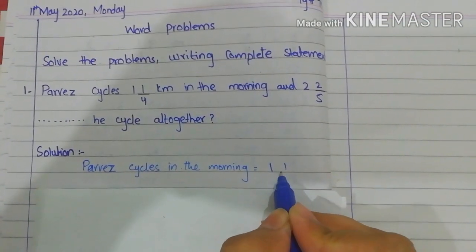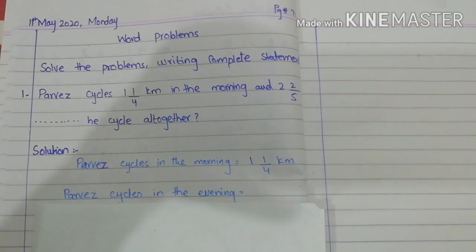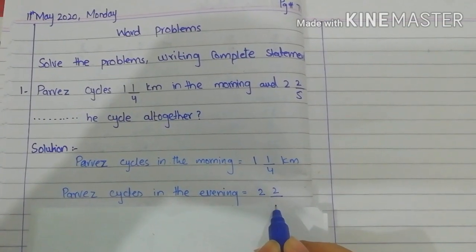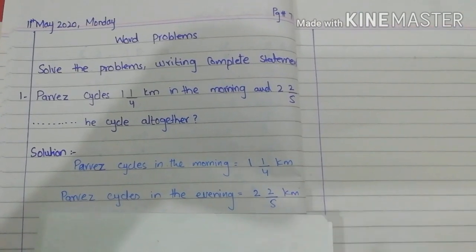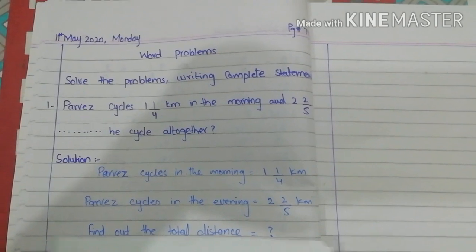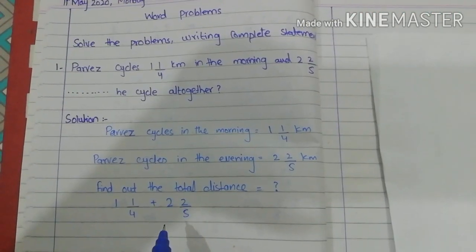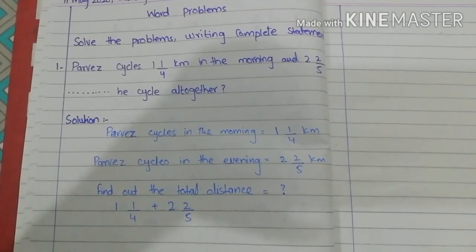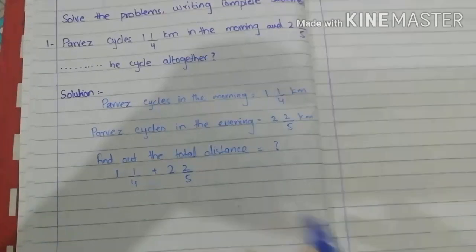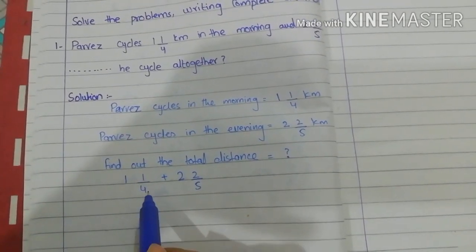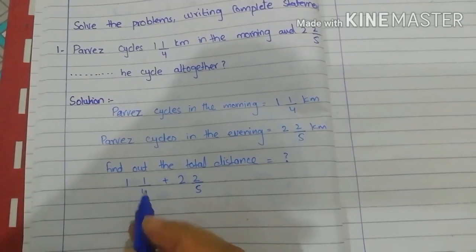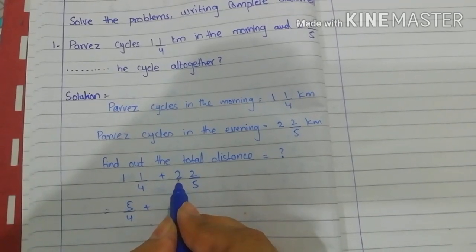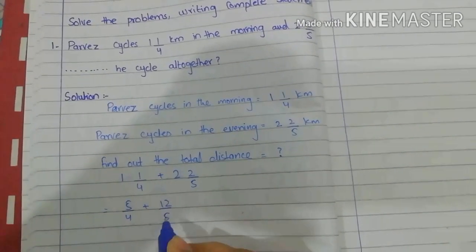Solution: Perway cycles in the morning 1 whole 1/4 km, and in the evening 2 whole 2/5 km. We will add these mixed numbers. First we convert mixed numbers into improper fractions, then solve. We multiply the whole number by the denominator and add the numerator: 4×1+1 = 5, so 5/4; and 5×2+2 = 12, so 12/5.